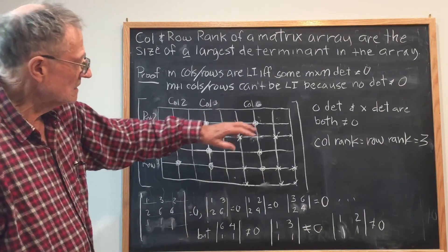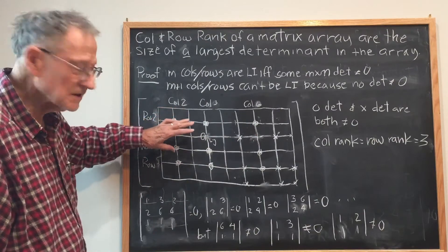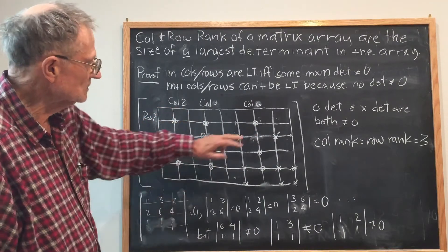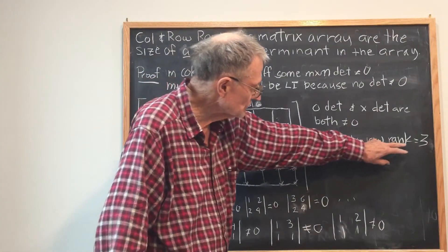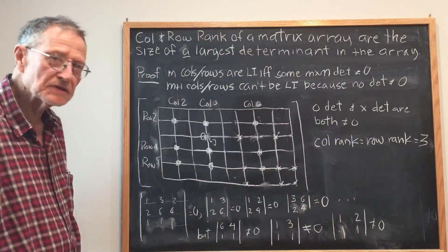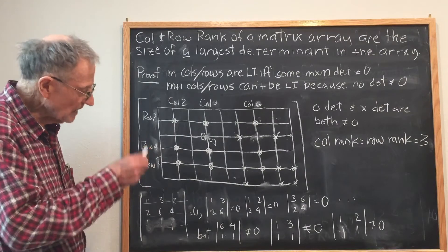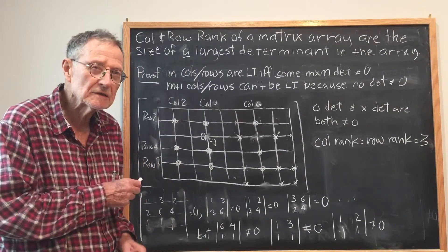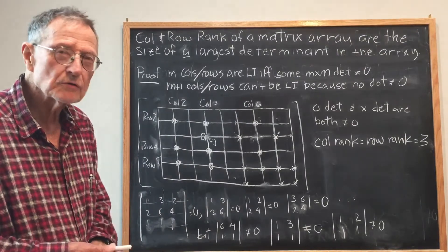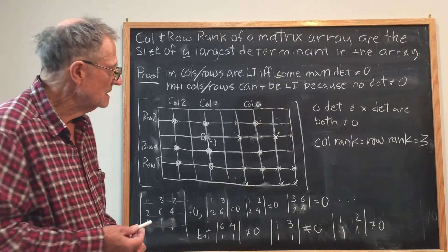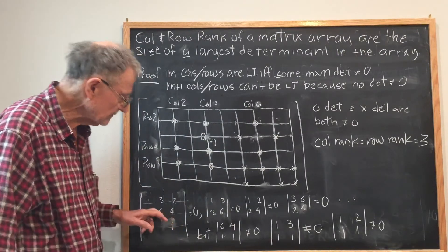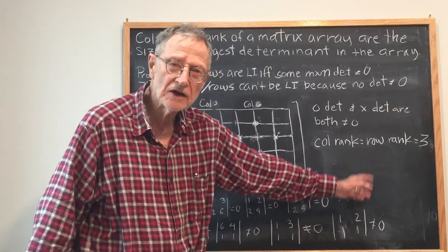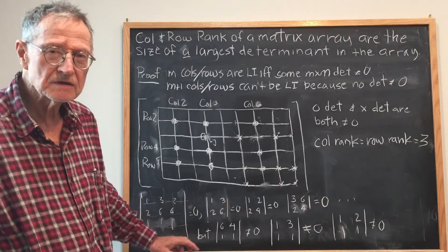Here, the largest non-zero determinant was a 3 by 3 determinant, so the column rank is equal to the row rank, which is equal to 3 for that array. Finally, I should add that in general this is not a practical way to determine the row rank or the column rank of a matrix, because even for a 3 by 3 you get a large number of possible determinants. Thank you.